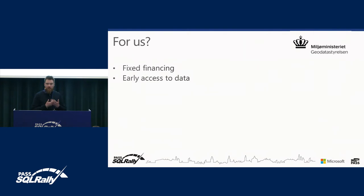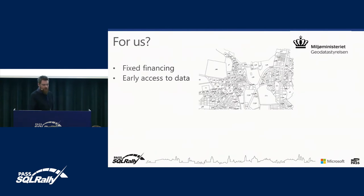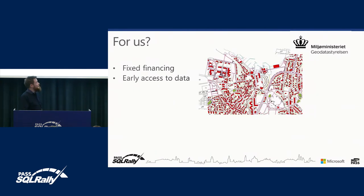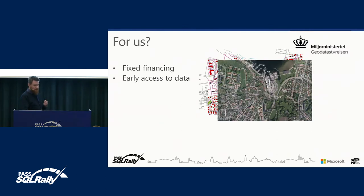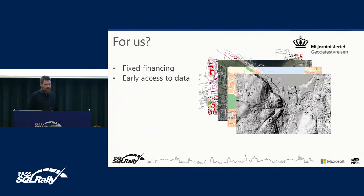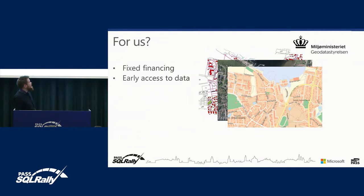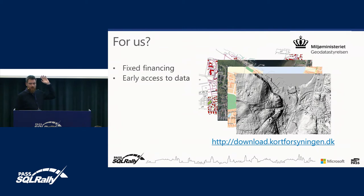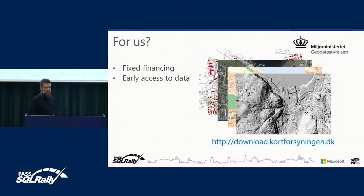For us, it means we are not dependent on a fixed income, and we are obliged to provide early access to data. That goes for cadastral maps, base maps, orthophotos or satellite images — mostly known as Google Earth or Bing Maps — derived topographic maps with place names and colouring schemes, and height data. All of this is today available for free. You can make an account by registering with an email and a password and download everything.